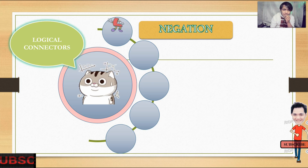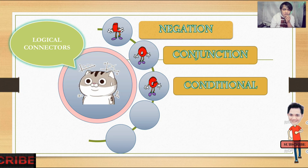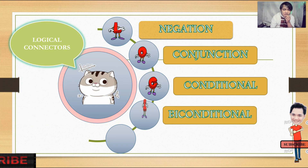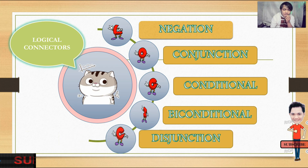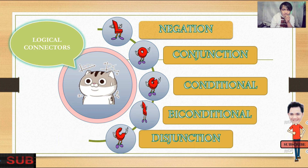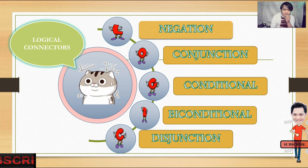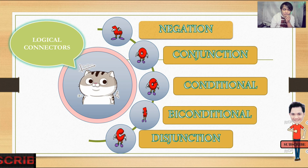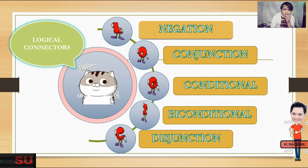We have five: the negation, the conjunction, the conditional, the biconditional, and the disjunction. These five connectors are the ones that we use to create logical statements.